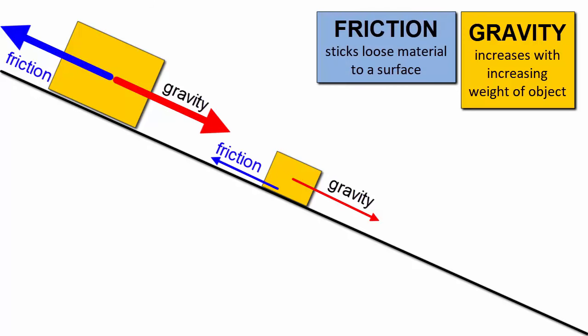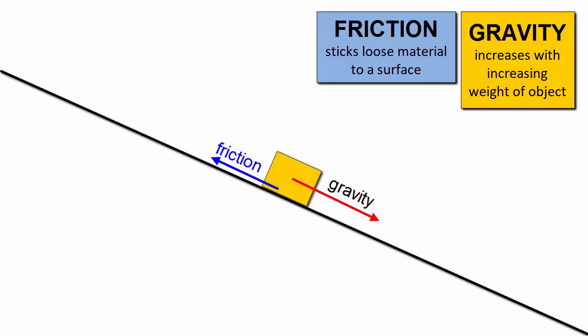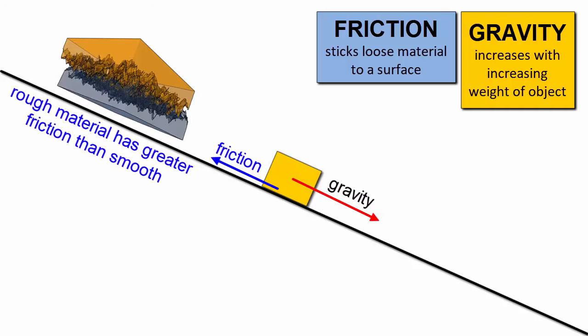Friction is the force that sticks loose material to a surface and needs to be overcome by the force of gravity before objects can move. Friction depends on the materials involved and the angle of the slope. Rough material has more frictional stickiness. Smooth material, less so.